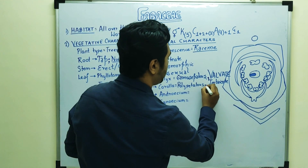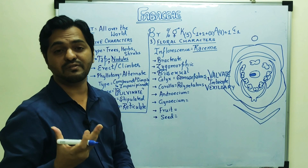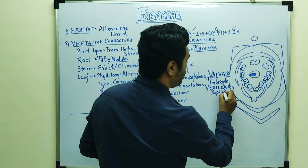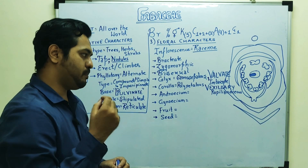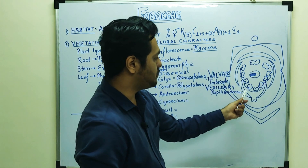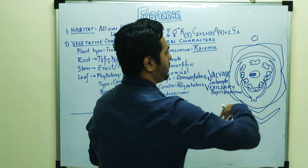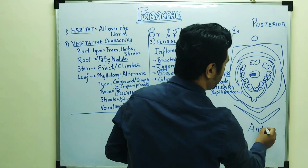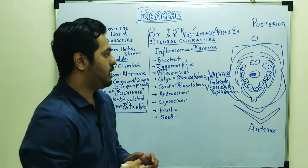The aestivation is very important — it is called Vexillary Aestivation, and vexillary aestivation is a diagnostic feature of the Fabaceae or Leguminaceae family. This gives a butterfly-shaped corolla, which is the Papilionaceous corolla. The back petal is called the Vexillum or Standard Petal, inner to that are the Wings, and the innermost petals are the Keel or Carina, which are fused. The posterior-most petal is the largest, and the anterior-most are fused. The arrangement is 1 + 2 + 2.